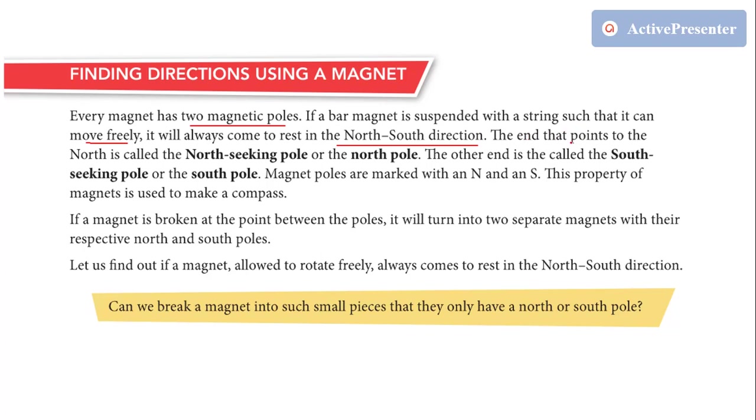So the end that points to the north is called north-seeking pole or you can say north pole, and the another end is called south-seeking pole or you can say south pole.